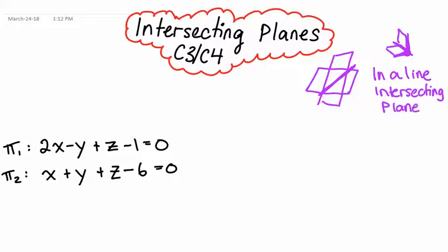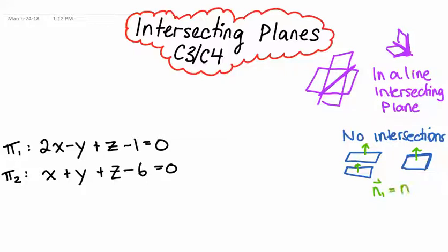Intersecting planes will always intersect in a line. Or, you can have planes that don't intersect - no intersection. So, that would be like two parallel planes so they never cross, or two coincident planes like right on top of each other. And the important thing to know about these ones is that their normal vectors for both planes will be the same. They'll have the same normal vector, or a scalar multiple of their normal vectors.